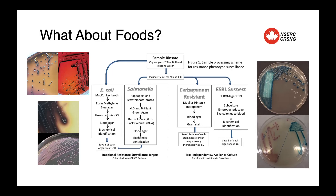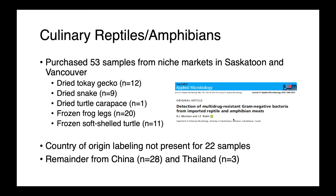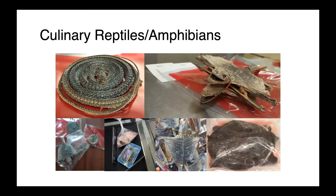We also looked more broadly for organisms which were resistant regardless of what species they were — what we called a taxa-independent surveillance culture. In our first investigation, we looked at what we called culinary reptiles and amphibians. We purchased 53 samples from niche markets in Saskatoon and Vancouver, including dried tokay geckos, dried snakes, a dried turtle carapace, some frozen frog legs, and frozen soft-shell turtles. Country of origin labeling was not present on 22 of the samples, and the remainder were from China and Thailand.